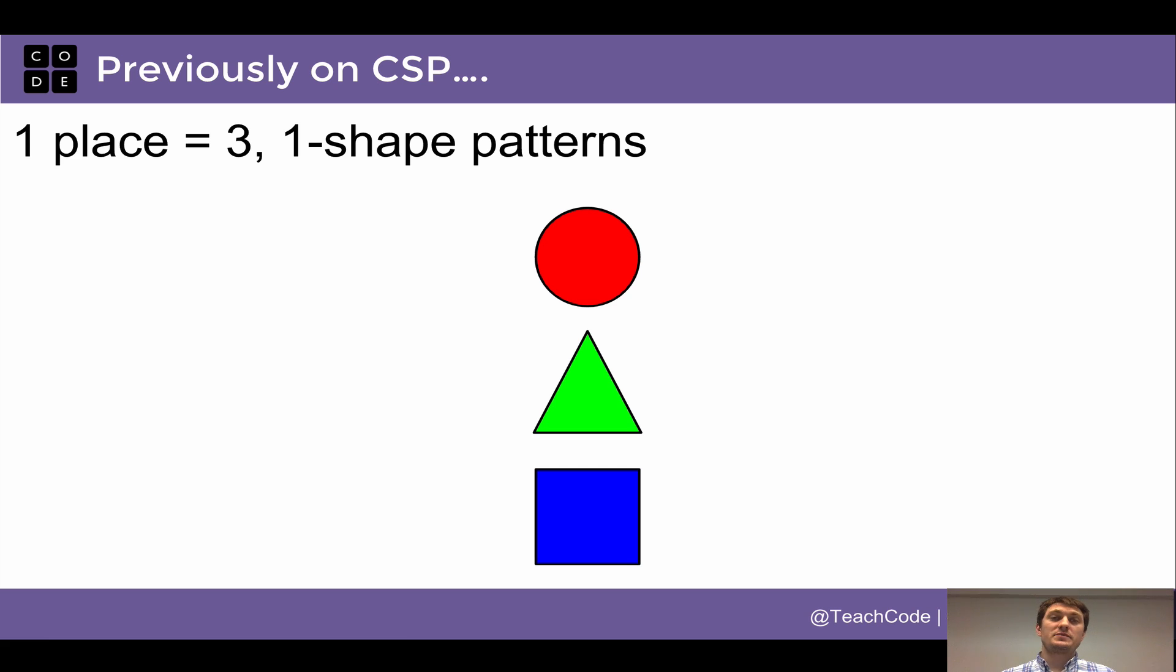So we saw in the last class when we had one shape or one place to put three possible shapes, a circle, a triangle, and a square, that with only one place there are three possible patterns, just the circle, triangle, or square by themselves.